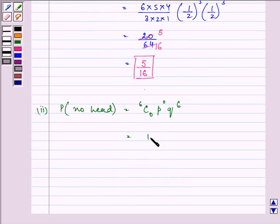So on simplifying it, we have one into one by two upon six, giving us the answer as one by sixty-four. So this is the answer to the second part.